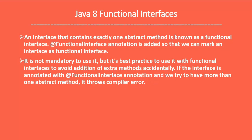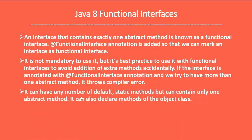So it's a best practice to use the @FunctionalInterface annotation on top of functional interfaces. A functional interface can have any number of default and static methods, but can contain only one abstract method. There are predefined functional interfaces introduced in Java 8 — these interfaces contain no default and static methods apart from a single abstract method, which I will show a bit later.